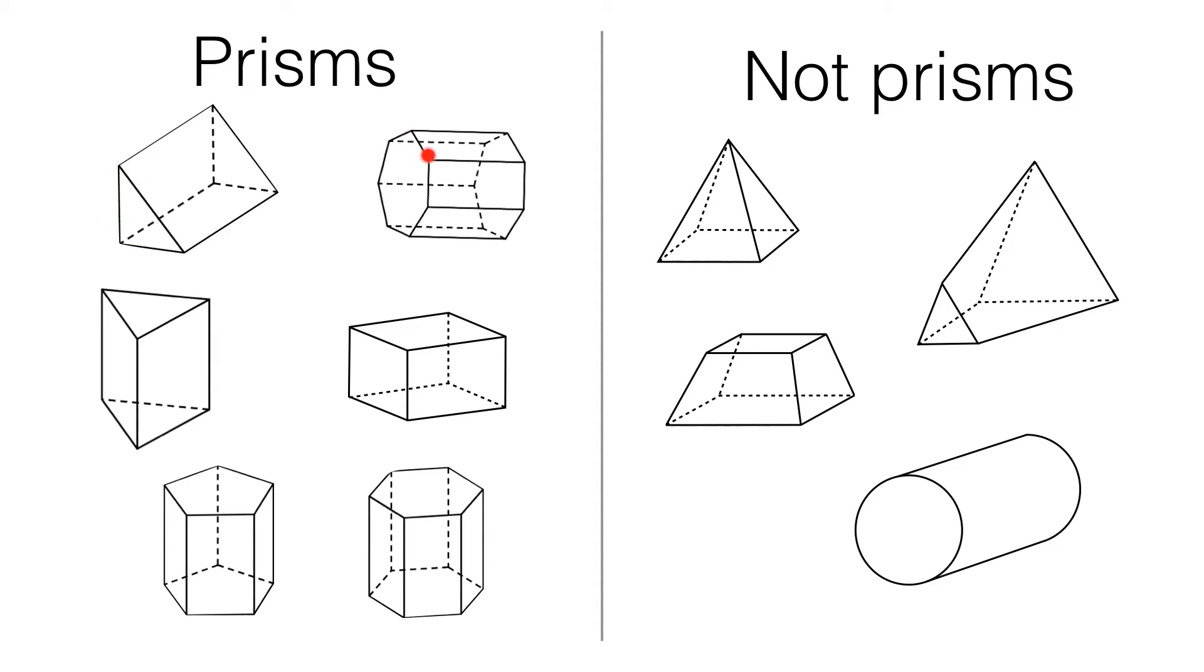Next we have a heptagonal prism, the cross-section here is a heptagon. We have another triangular prism here, the cross section is a triangle. Here we have a pentagonal prism, there's the cross-section. Here we have a hexagonal prism, the cross-section there is a hexagon unsurprisingly enough.